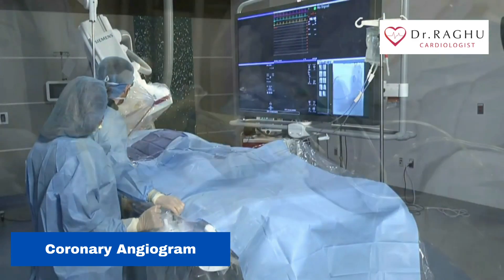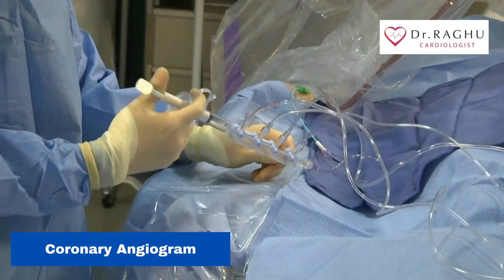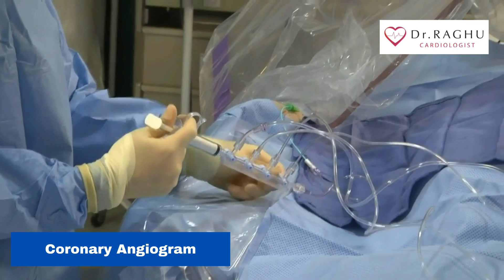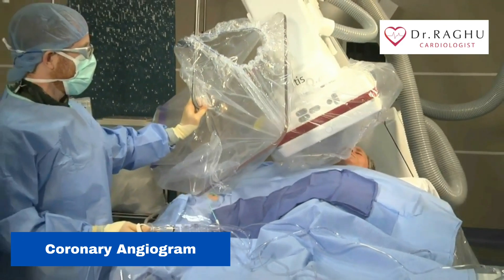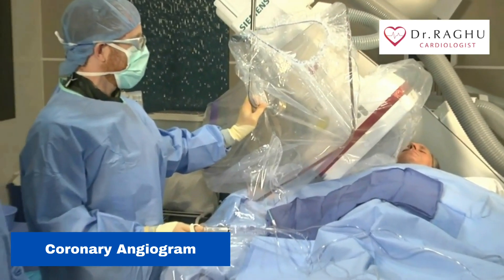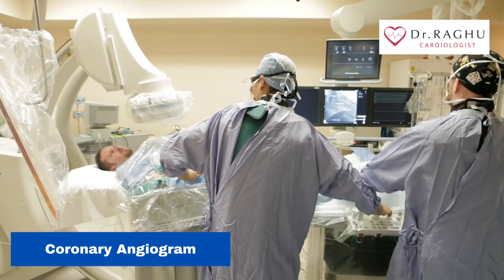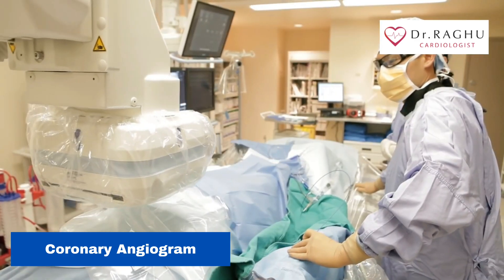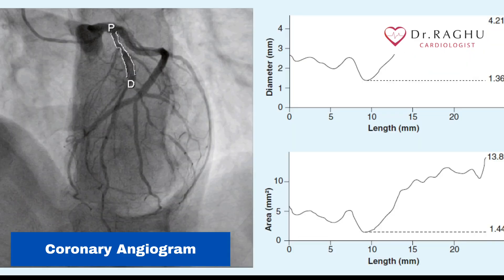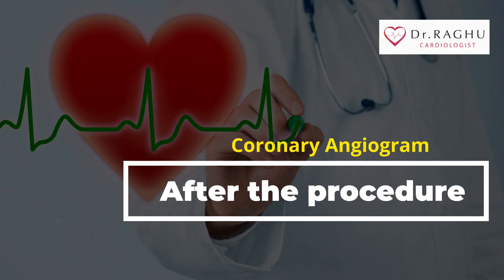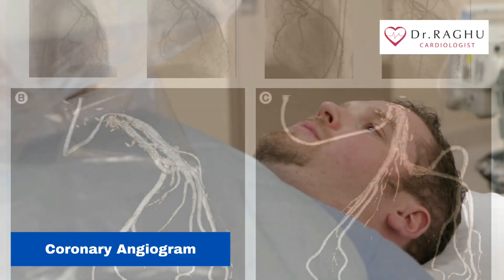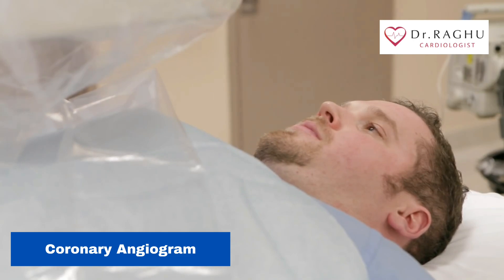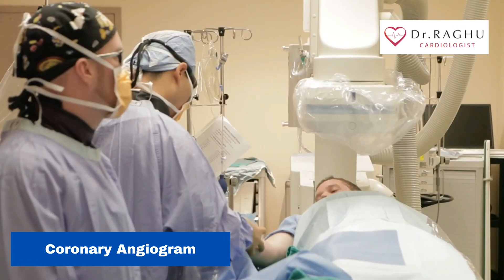The doctor will then inject a medicine referred to as contrast through the tube. This is a clear liquid that shows up under x-ray. An x-ray picture of your arteries appears on a screen, and the x-ray camera is moved around to create a 3D image showing where the narrowings are and how bad they are.